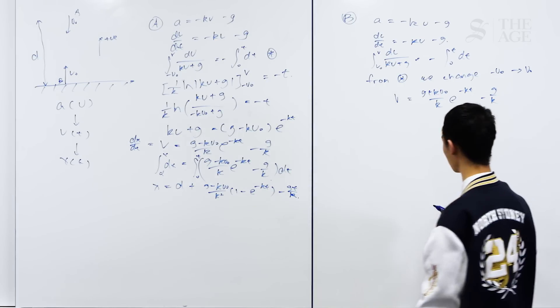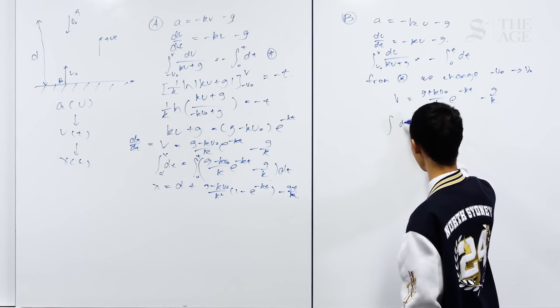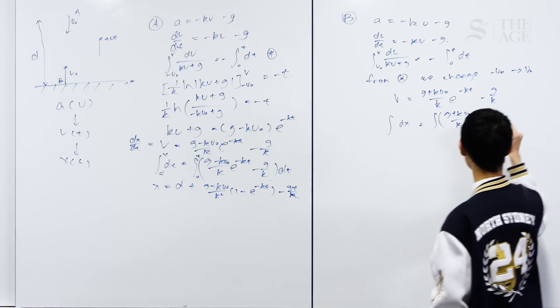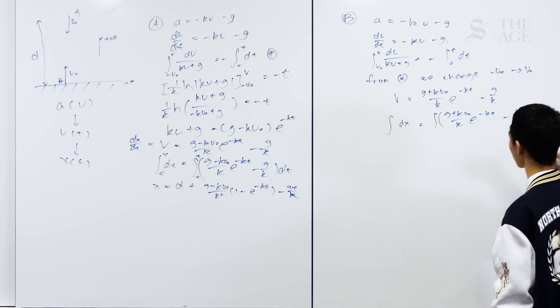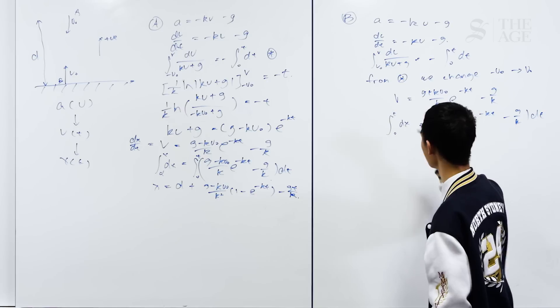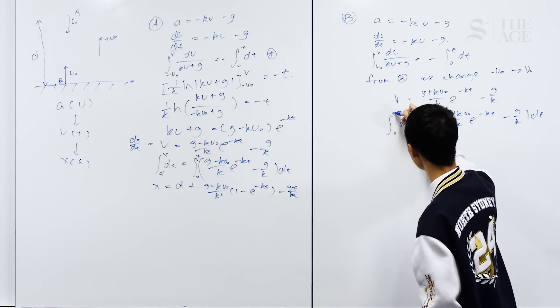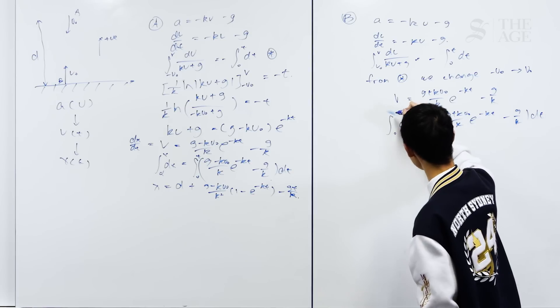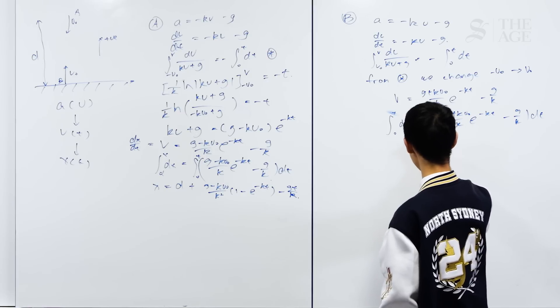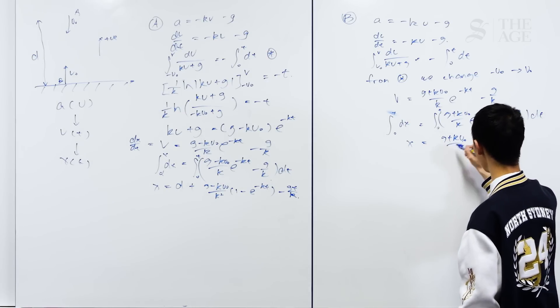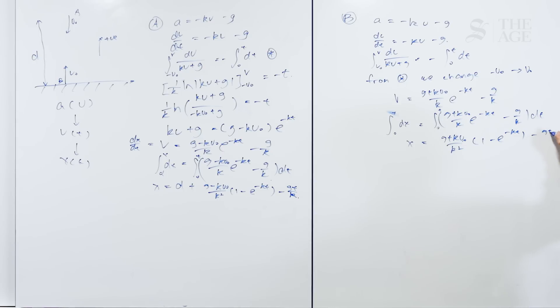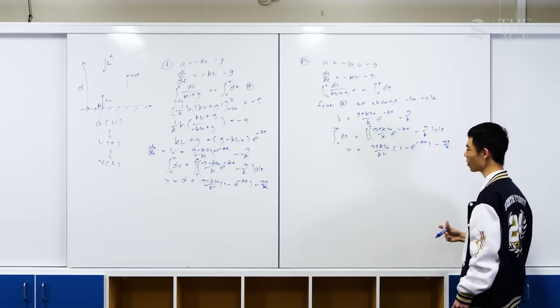Unfortunately, our time-saving step doesn't work as well for the next integral because it's not exactly the same. So dx equals integral [(g + kv0)/k]e^(-kt) - g/k dt. Again, the bounds are 0 when time is 0 because it's on the ground, and we have t, we have x. In this case, the displacement is going to be x equals [(g + kv0)/k²](1 - e^(-kt)) - gt/k. So now we've done our integrals.